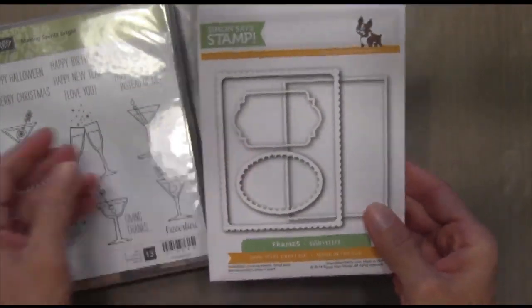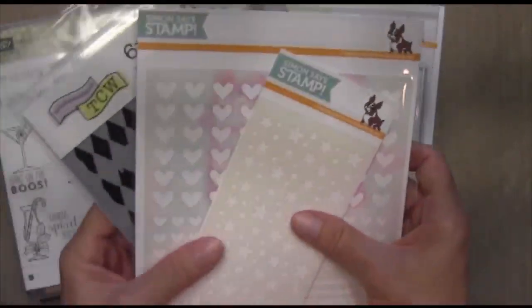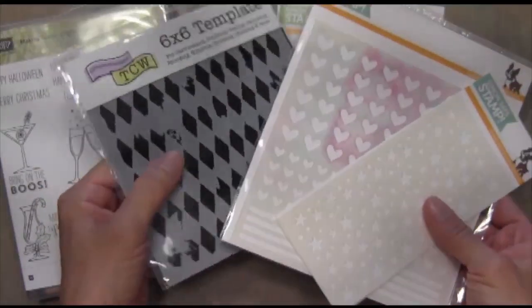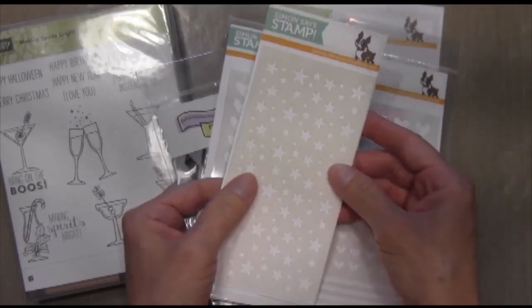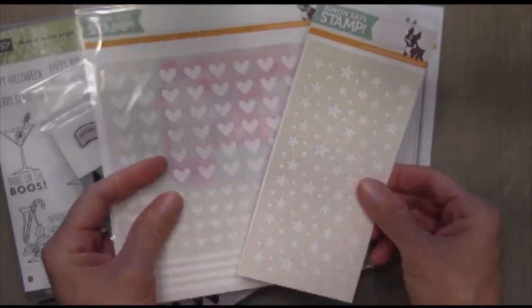I'm using the Frames dies by Simon Says Stamp on all of these cards and also some stencils. These are the stencils I used and I'm going to be using the Stars and Dots one from Simon Says Stamp on the Christmas one that I'm about to do.